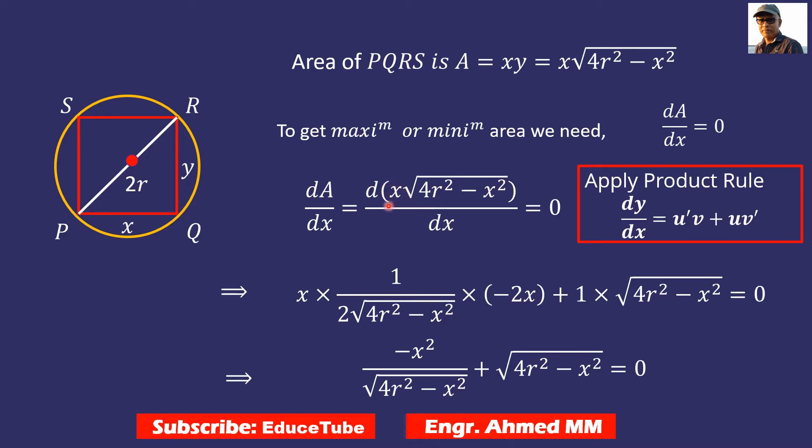One is x, another is the square root term, so two functions. Following this we will get like this. I am not going to explain how to do the differentiation because you must know that. I'm only putting the guidelines that it will be according to product rule.